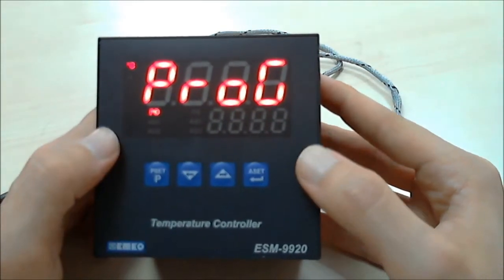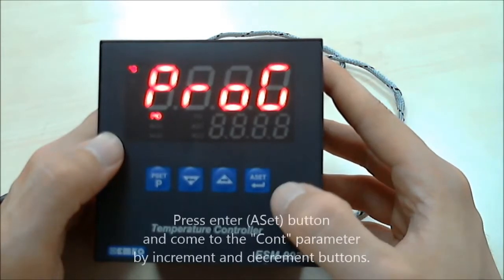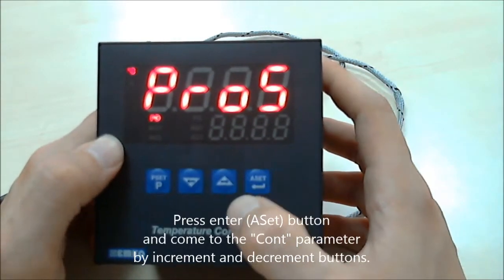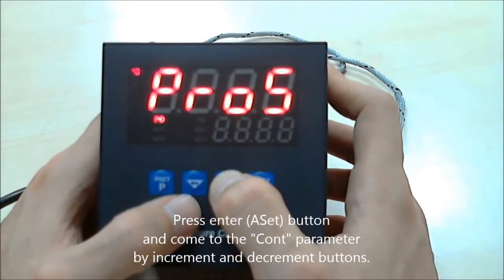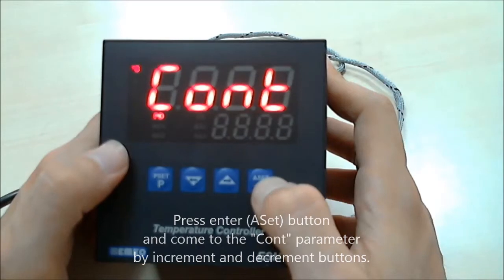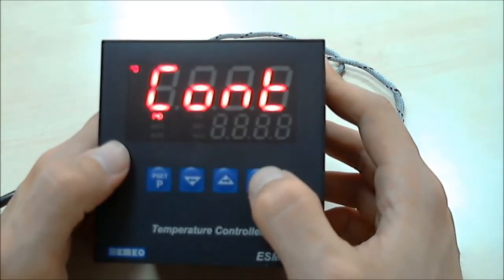We enter the technician parameters and then press enter button. By increment or decrement buttons, come to the CntS parameter and then press enter button.